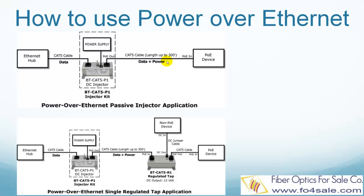Other network devices, including most legacy products, are not PoE compatible, which means they cannot directly use the DC power from the cable. In this case, you need a DC picker, also called a splitter, as shown in the bottom picture. The DC picker picks off the DC voltage from the Power over Ethernet cable and makes it available to the non-PoE compatible device through the regular DC power jack.